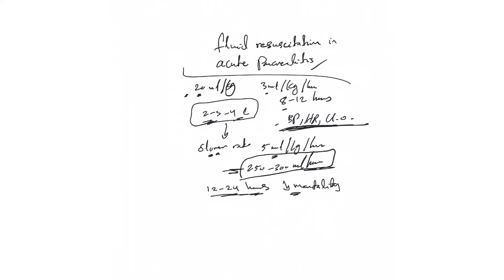As I said, if you don't want to do calculations, give two, three, even four liters if they are hemodynamically unstable. If the patient has pancreatitis but is hemodynamically stable, you skip the initial bolus and come to the maintenance fluid resuscitation.